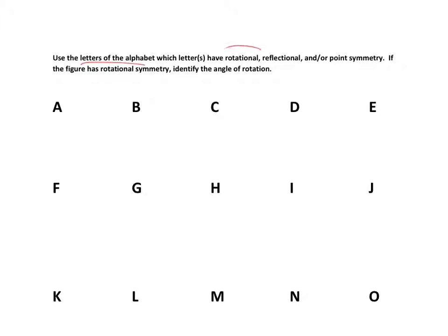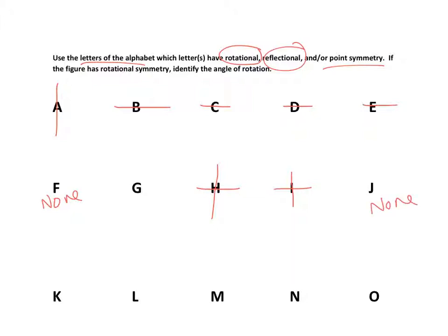Using letters of the alphabet, we identify which have rotational, reflectional, or point symmetry, and if rotational, we identify the angle of rotation. For line symmetry: one line here, one line, one line, one line, one line, none, two lines, two lines, none. The letter K has one line of symmetry. The letter O would have infinite lines of symmetry if it's a true circle.